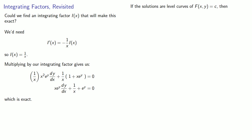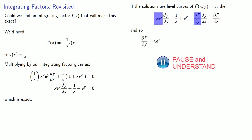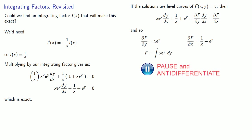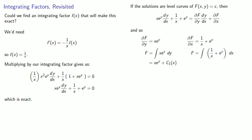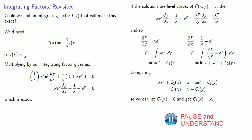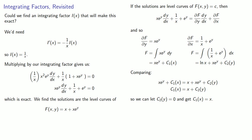Since the solutions are level curves, our differential equation has the form of a complete derivative. The partial of f with respect to y is the coefficient of dy/dx, and the partial of f with respect to x is the remaining term. Antidifferentiating with respect to y gives f up to some function of x, and antidifferentiating with respect to x gives f up to some function of y. Comparing the two, c1(x) must be x itself and c2(y) must be 0. Putting everything together, the solutions are the level curves of f(x, y) = x + x·e^y.